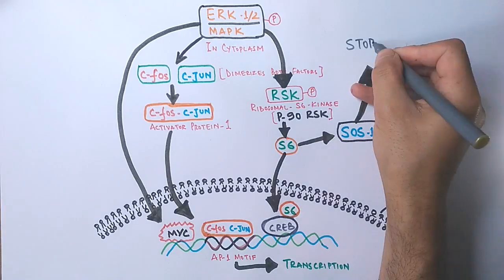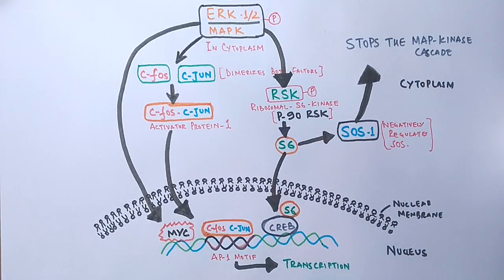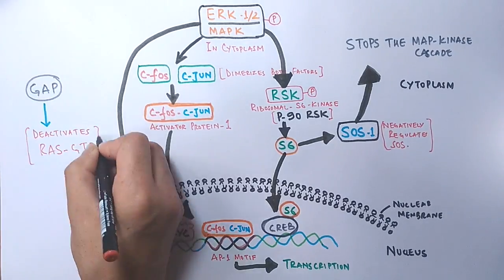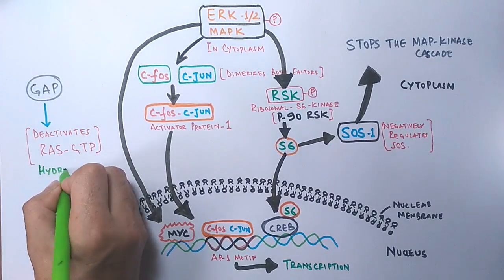We know the SOS molecule activates the RAS molecule in the pathway, so if this SOS molecule is made inactive, the cascade will cease to exist. This is one way to stop the signal, but not only this—there is another molecule called GAP molecule which hydrolyzes the GTP to its GDP form, thus rendering the RAS molecule in its inactive state.